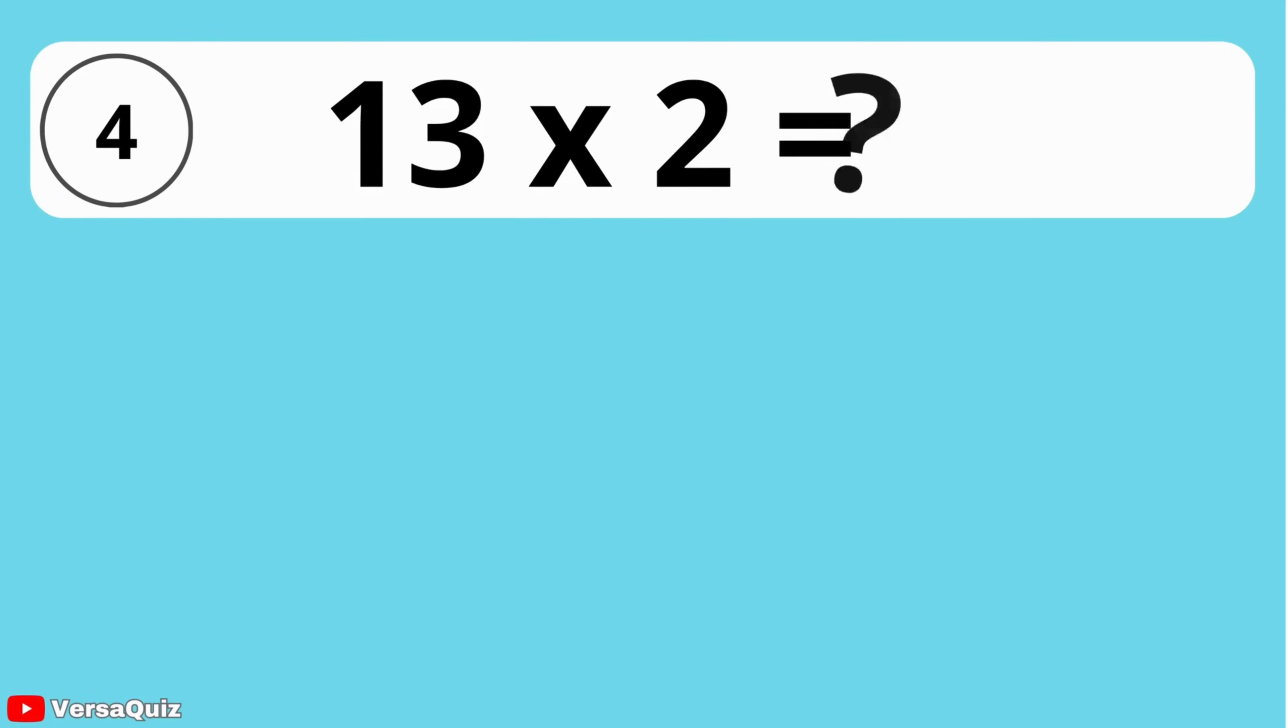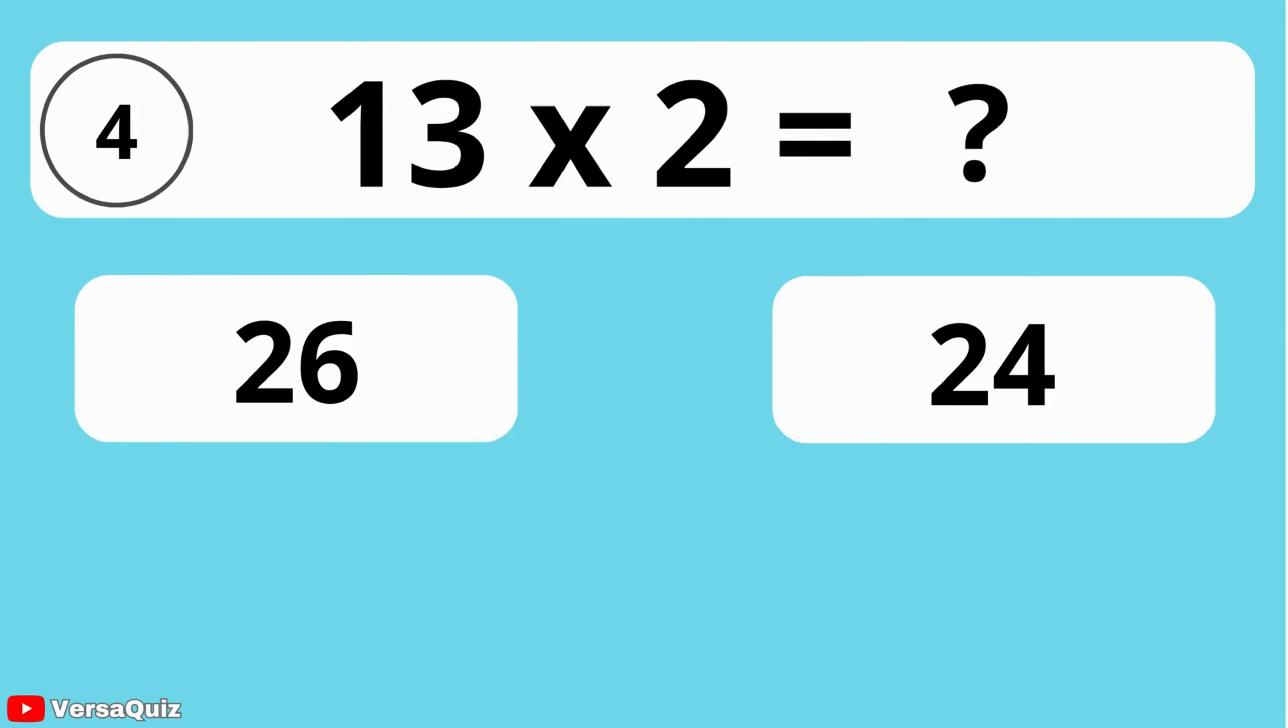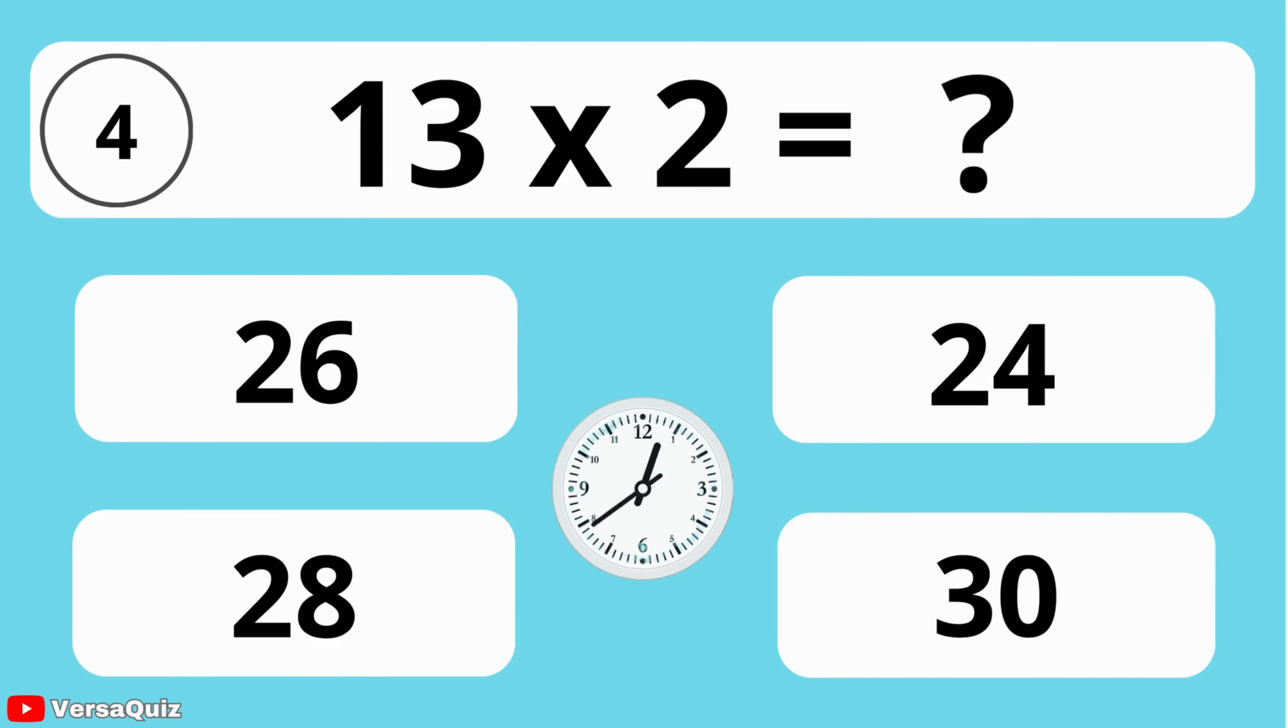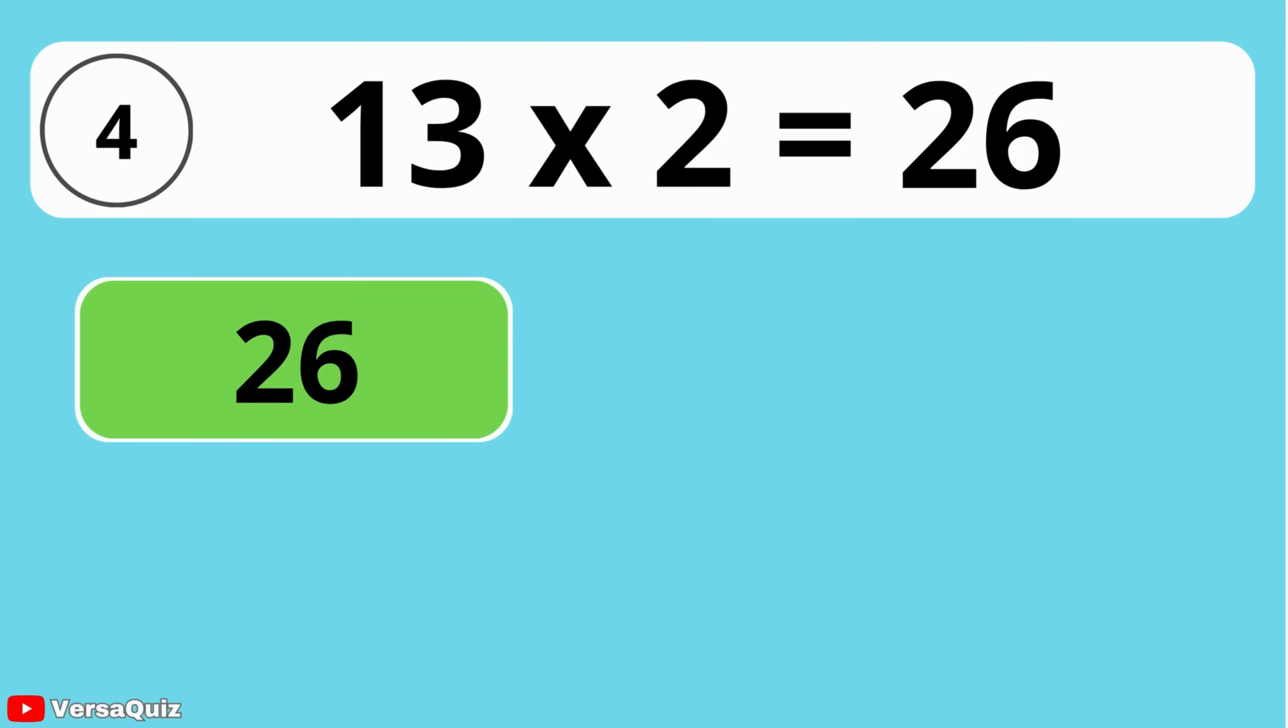What do you get when you multiply 13 by 2? 26, 24, 28, or 30? The answer is 26. Multiplying 13 by 2 gives you 26.